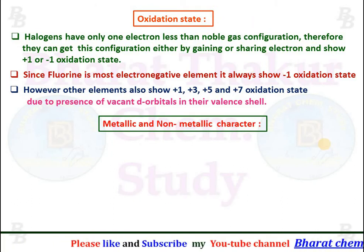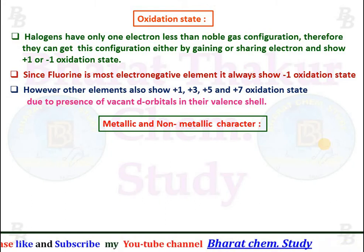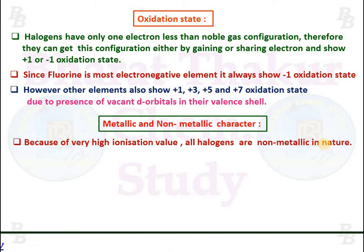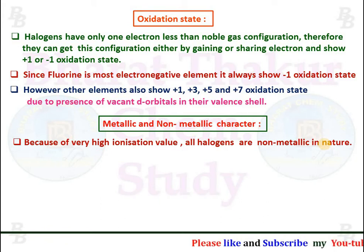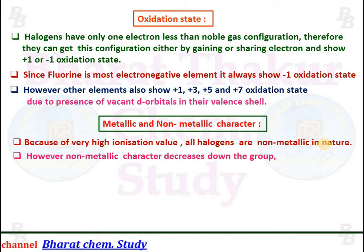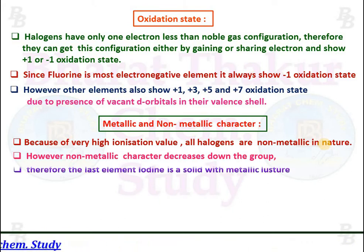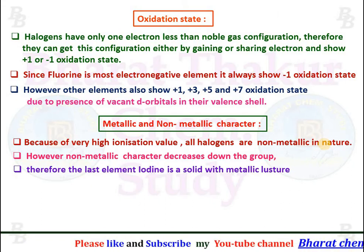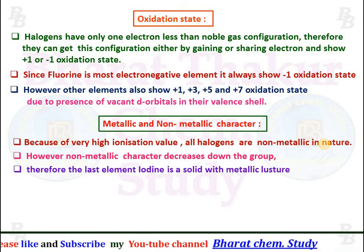Non-metallic character: because of very high ionization energy values, all halogens are non-metallic in nature. However, non-metallic character decreases down the group. Therefore, the last element, Iodine, is a solid with a metallic luster.